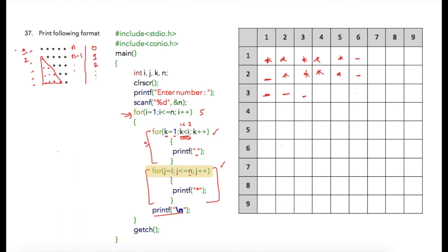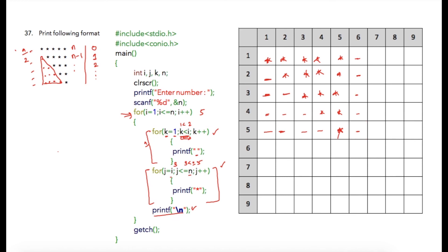When i is 3, j is initialized to 3 and the condition 3 less than or equal to 5 is true, so the loop executes 3 times printing 3 stars. Similarly the whole process continues: on the next line 3 spaces are printed then 2 stars, then 4 spaces and finally a single star. After printing that one star the cursor shifts to the next location, a printf statement moves it to the next line, and then the program is terminated.